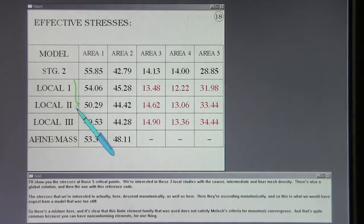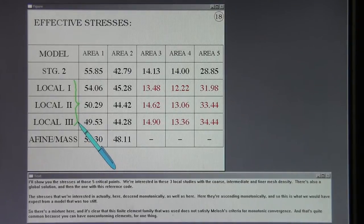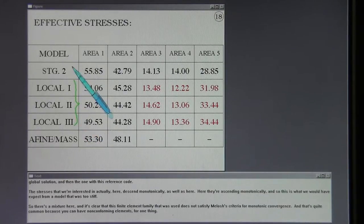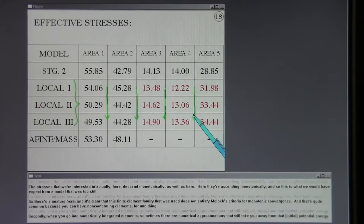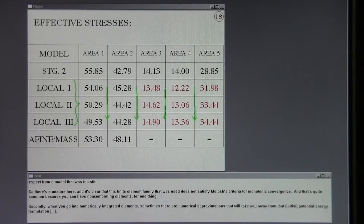I'll show you the stresses at those five critical points. We're interested in these three local studies with the coarse, intermediate, and finer mesh density. There's also a global solution and then the one with this reference code. The stresses that we're interested in actually here descend monotonically as well as here, here they're ascending monotonically. And so this is what we would have expected from a model that was too stiff. So there's a mixture here and it's clear that this finite element family that it was used does not satisfy Malash's criteria for monotonic convergence. And that's quite common because you can have non-conforming elements for one thing. Secondly, when you go into numerically integrated elements, sometimes there are numerical approximations that will take you away from that potential energy formulation initially.